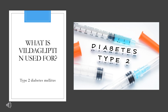What is Vildagliptin used for? Vildagliptin is indicated in the treatment of type 2 diabetes mellitus in adults. As monotherapy, Vildagliptin is indicated in adults inadequately controlled by diet and exercise alone and for whom metformin is inappropriate due to contraindications or intolerance. It is also indicated as dual therapy in combination with metformin, a sulfonylurea, or a thiazolidinedione in adult patients with insufficient glycemic control, despite maximal tolerated dose of monotherapy.